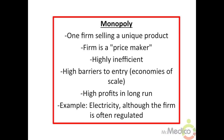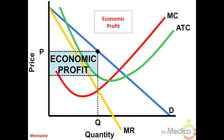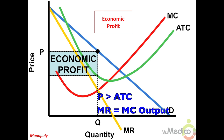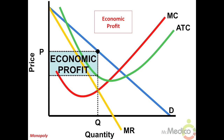To illustrate an unregulated monopoly with an economic profit, the price represented by the demand or average revenue curve must exceed the average total cost curve at the MR equals MC level of output. Demand is downward sloping for the monopolist since it represents the entire industry's demand. The marginal revenue curve is also downward sloping but sits below the demand curve.